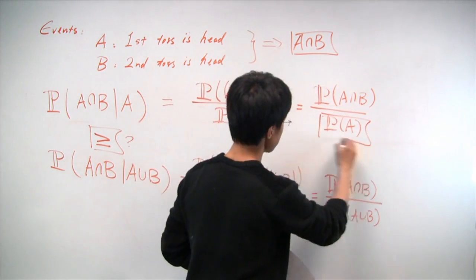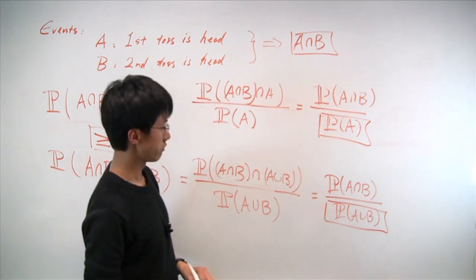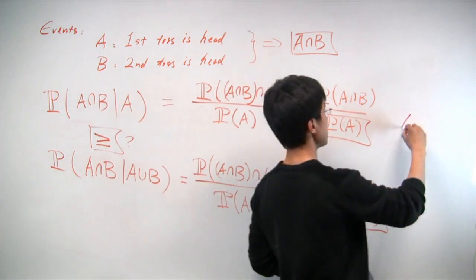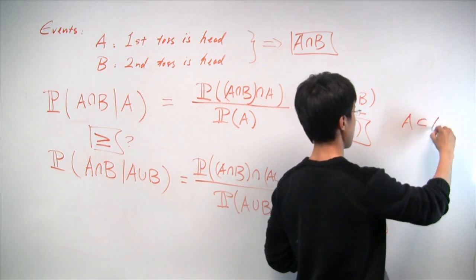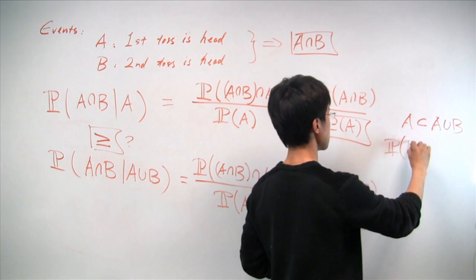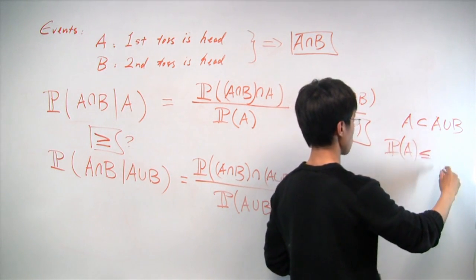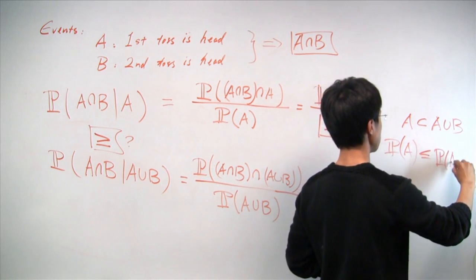And the denominator in the first case is probability of A, and the second case, probability of A union B. Since we know that A is a subset of the event A union B, and by the monotonicity of probabilities, we know that the probability of A is hence no greater than the probability of A union B.